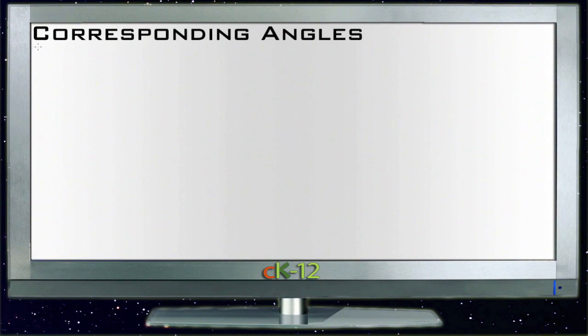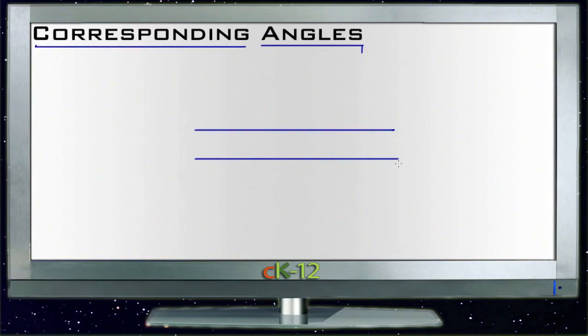The concept of corresponding angles isn't terribly complex but it can be a little bit tricky. The idea behind corresponding angles is that if you have two lines that are parallel, so we'll call this line A and line B.